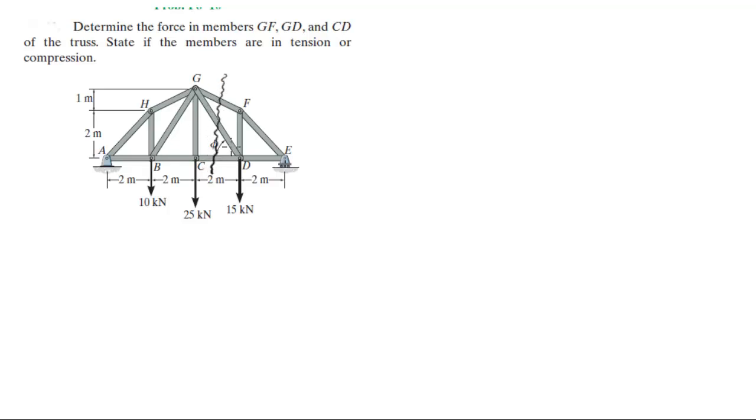You want to use the method of sections and cut it right here. Do you use the left or the right of the diagram? Well, I would use the right of the diagram because E has only one vertical reaction whereas A can have both a horizontal and a vertical reaction, which will make using the right hand side much more feasible. So let me redraw the right hand side right here.